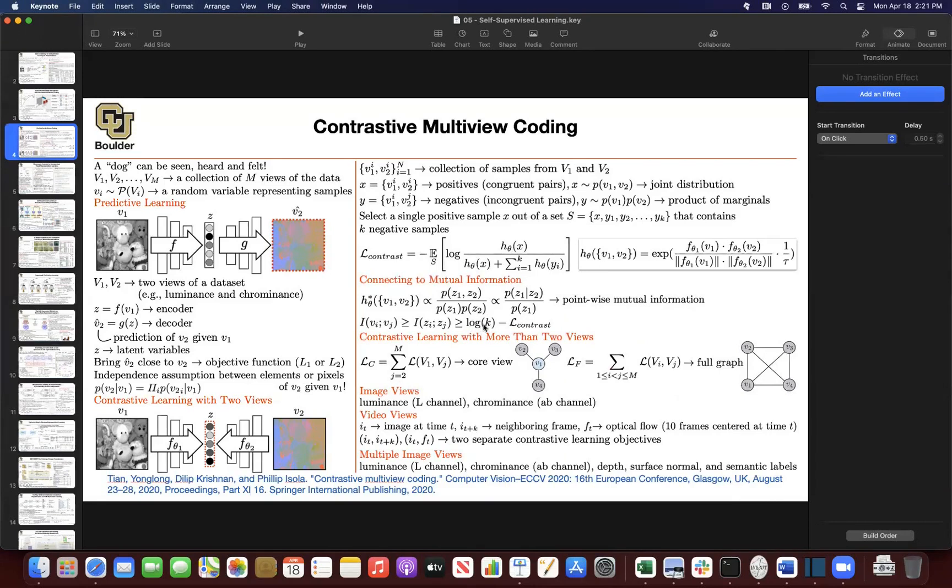If the log term is bigger, you're increasing the mutual information between the two views. At the same time, if you're minimizing the contrastive loss, you're maximizing its negative. Therefore, you're increasing the mutual information.